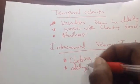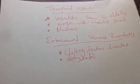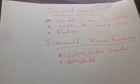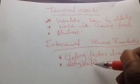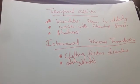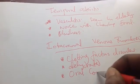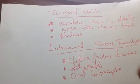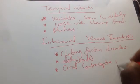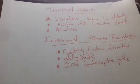If a person is dehydrated, the clotting factors become concentrated, causing the blood to coagulate more easily. Also, taking oral contraceptives increases the production of clotting factors, which can lead to thrombosis. All these factors can lead to intracranial venous thrombosis, which causes headache.